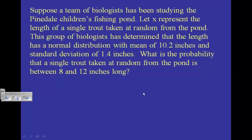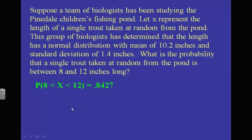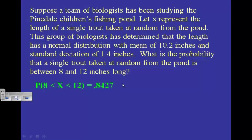Keep in mind we're finding the probability for a single trout. We simply use normCDF: lower is 8, upper is 12, mean is 10.2, and standard deviation is 1.4. Notice we have just a single X here — this is for a single trout. Now here's a follow-up question.